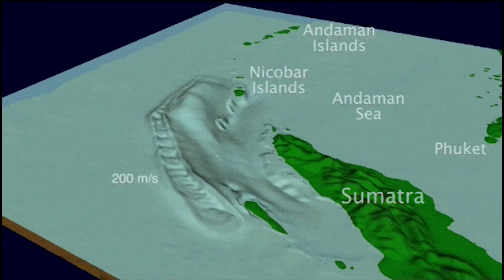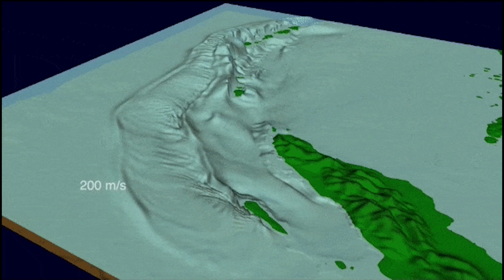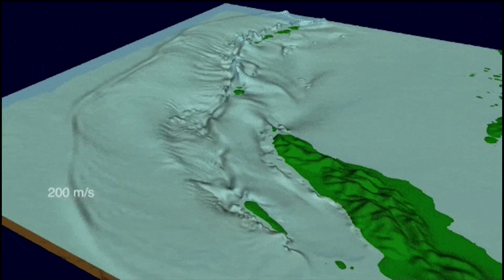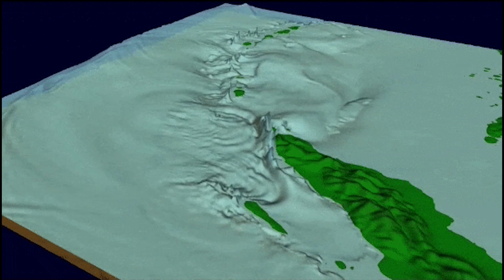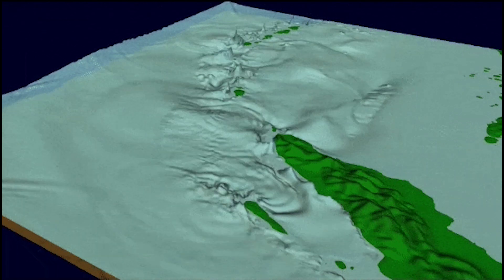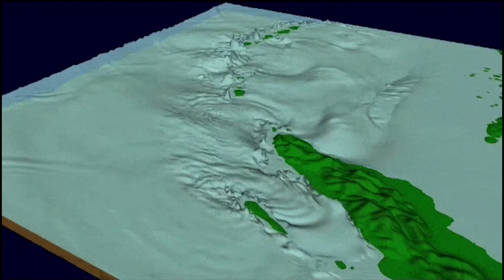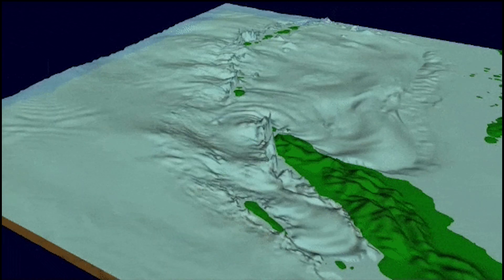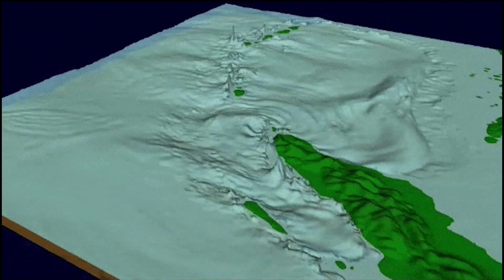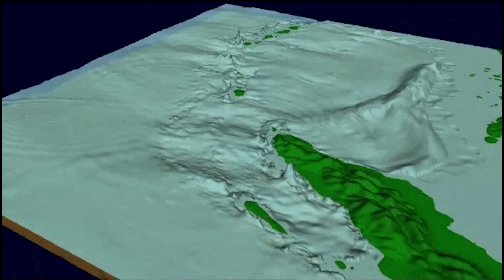The movement of lithospheric plates created waves with a height of more than 15 meters. The tsunami reached the shores of Indonesia, Sri Lanka, southern India, Thailand, and many other countries, killing about 300,000 people. This earthquake was so powerful that the shockwaves passed through the entire planet, and the islands located near the epicenter shifted tens of meters.